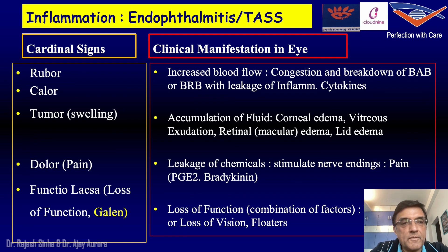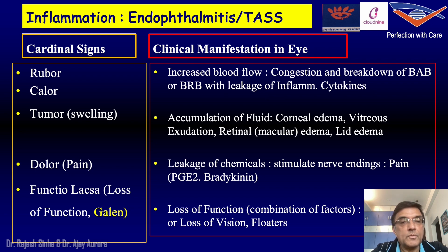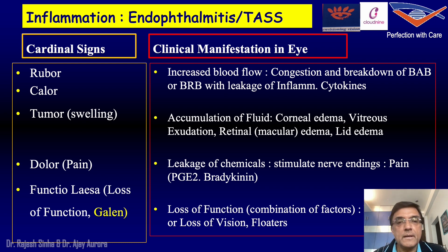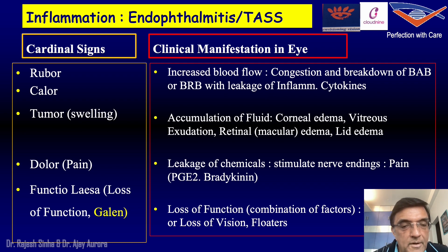All these cases of inflammation have cardinal signs — the basics of inflammation we have read in pathology. Rubor is redness of the eye, because of increased blood flow, congestion, and breakdown of the blood-retinal barrier. Calor indicates localized increased temperature. Tumor is accumulation of fluid — you can have corneal edema, vitreous exudation, or retinal or macular edema and limb edema. Dolor is stimulation of nerve endings, that is pain, and functio laesa is loss of visual function or presence of floaters.